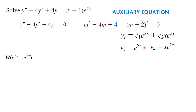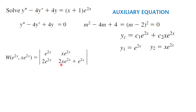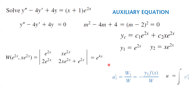The Wronskian of e^(2x) and x*e^(2x) is the determinant of e^(2x), the derivative of e^(2x), x*e^(2x), and the derivative of x*e^(2x) using the product rule. This can be written as e^(4x) — distributing e^(2x) into the summation minus the multiplication of the other two — so the Wronskian is e^(4x). This is the Wronskian that goes in the denominator. Remember that u1 prime is W1 divided by W, which equals negative y2*f of x divided by the Wronskian, and u1 is the integral of u1 prime.